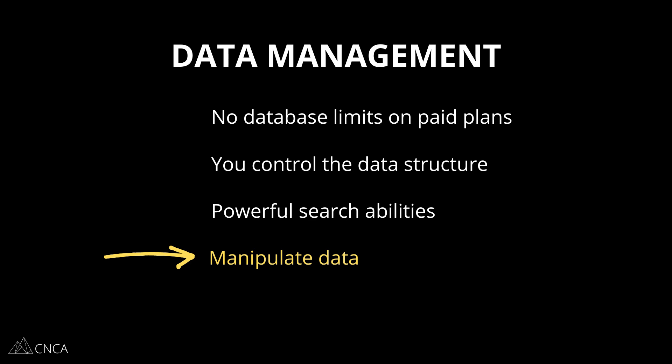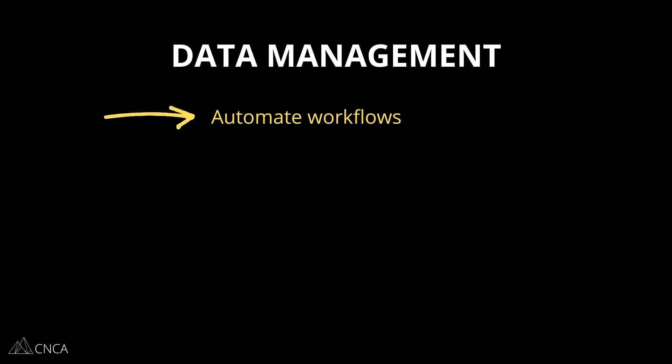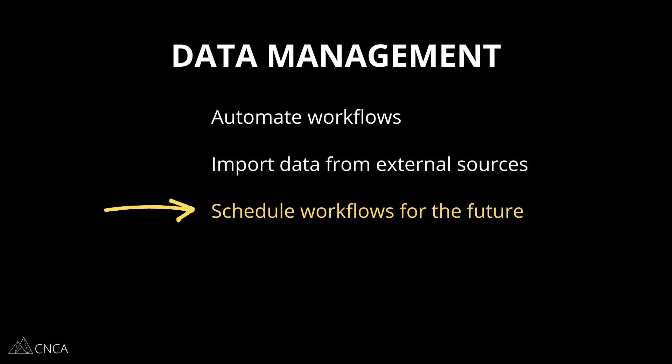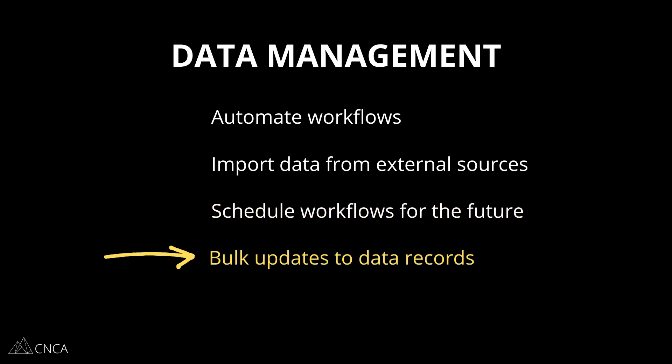Bubble supports a wide variety of sophisticated data manipulations that you can custom configure for your own app's needs. For example, you can run all sorts of calculations on numbers and dates. You can create things on a loop, so if you need data to be modified or created in a specific sequence, you can absolutely set things up to do that. You can wait for changes to happen in your database before you carry out other actions. You can communicate with the outside world, pull data in from an external source, send data out to another source. You can schedule changes in your database to happen at a specific date and time, and of course run bulk operations to modify a lot of records all at once.